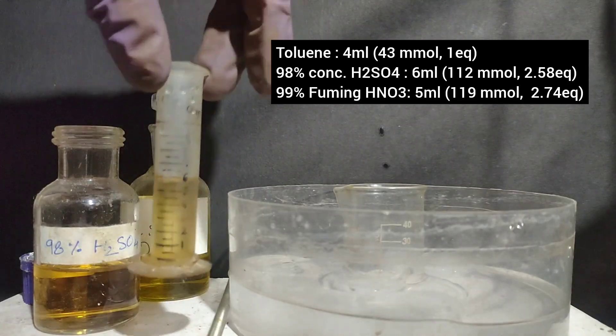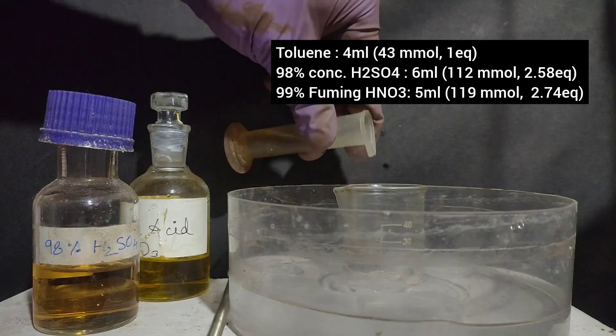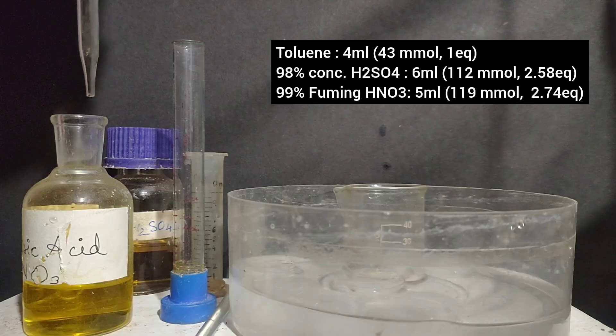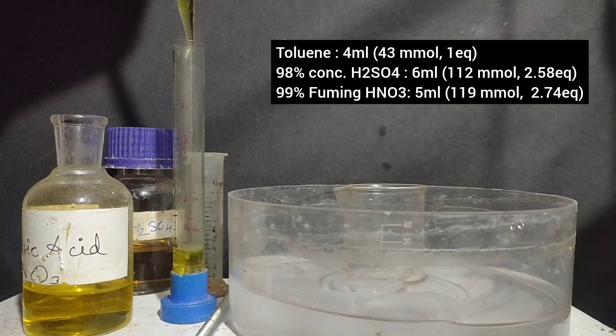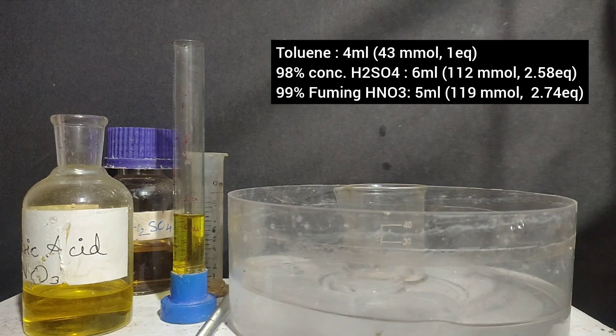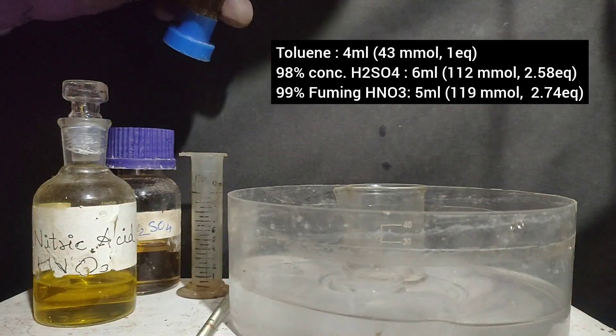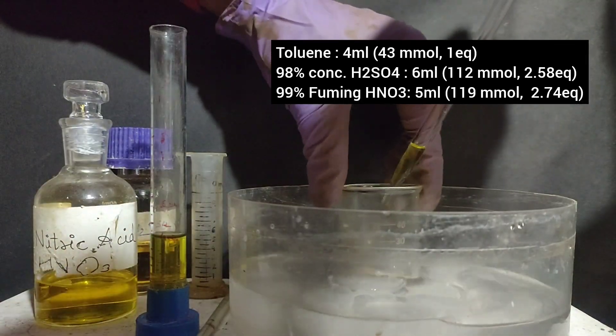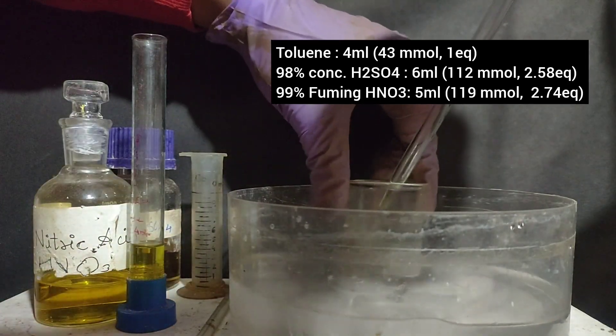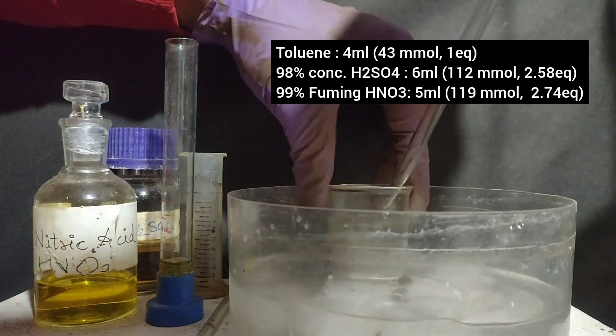For it I prepared a nitrating mixture by taking 6 ml of 98% concentrated sulfuric acid in a beaker kept in an ice bath, and to it 5 ml of 99% fuming nitric acid was added. This addition does not evolve much heat as usual nitric acid which uses 68% nitric acid, since there is very little water present. After the addition, the mixture is allowed to chill in the ice bath as we need a cold nitrating mixture for the first nitration.